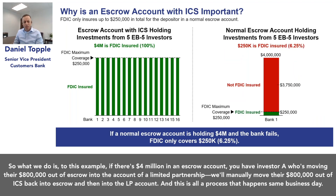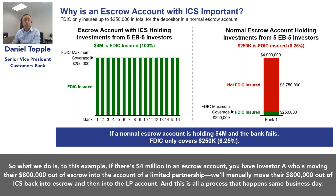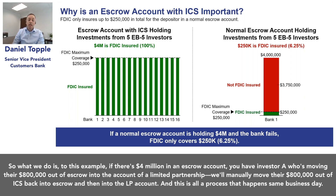For example, if there's $4 million in an escrow account and investor A is moving their $800,000 out of escrow into the account of limited partnership, we will manually move their $800,000 out of ICS, back into escrow, and then into the LP account. This is all a process that happens same business day.